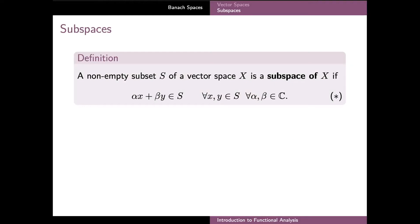The purpose of this video is to record the concept of a subspace for a general vector space and to study some particular examples. A subspace S of a vector space X is defined exactly as in linear algebra: it is a non-empty subset of a vector space X such that condition star holds, where x and y are arbitrary elements of the subset S and alpha and beta are arbitrary scalars.